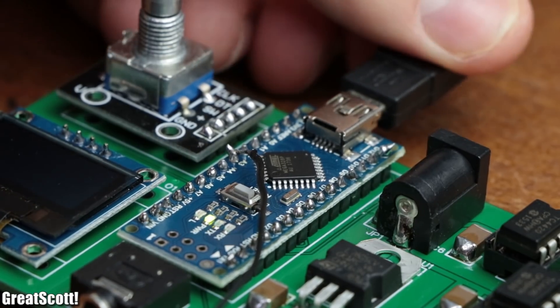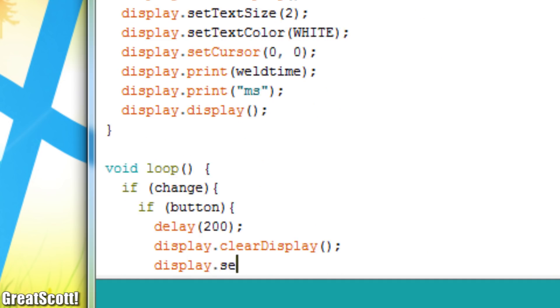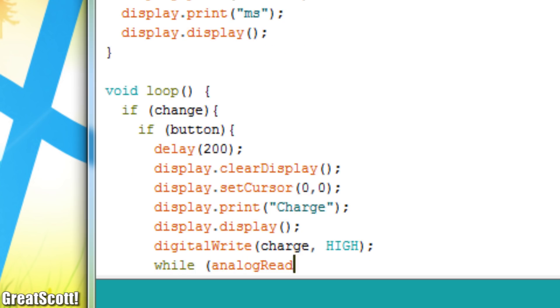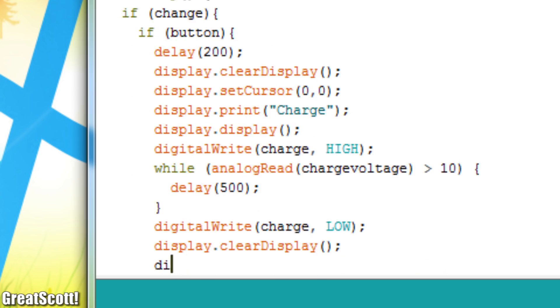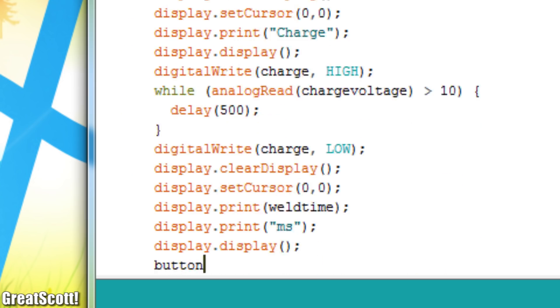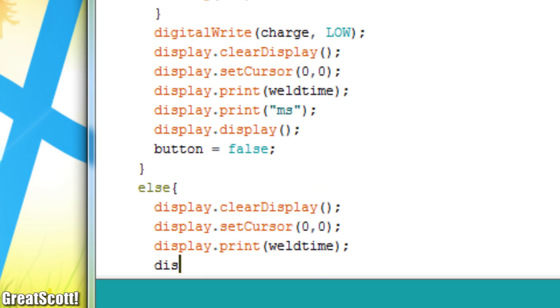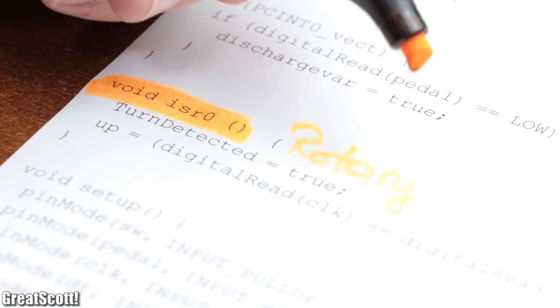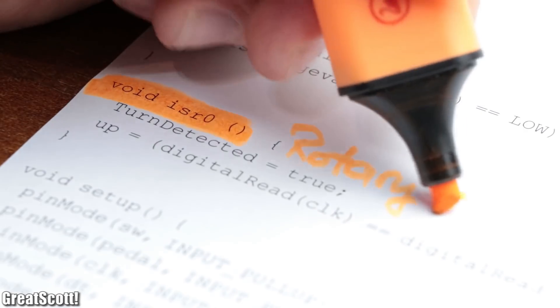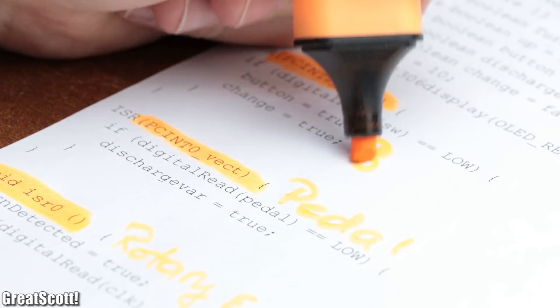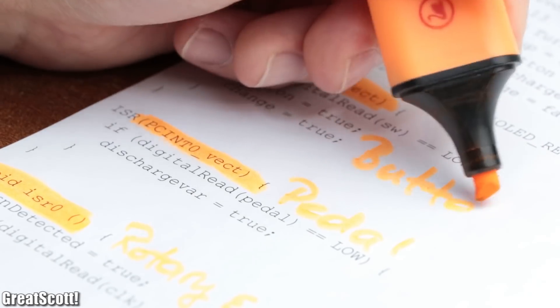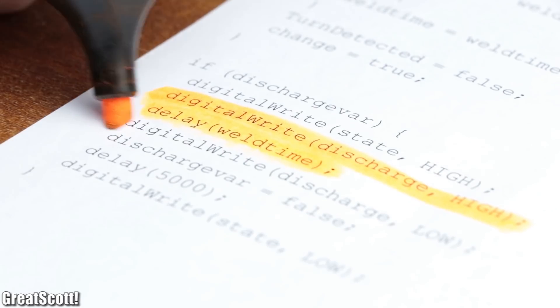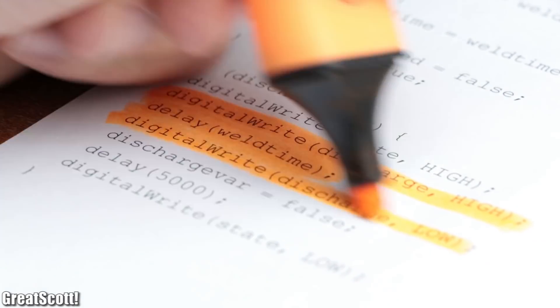Now I will not go into too much detail on how I created the code, since I already talked about interfacing each one of the utilized components in previous videos. Let me just say that I used an external interrupt for the rotary encoder, pin change interrupts for the push button and the pedal button, and a super simple delay function to create the welding pulse.